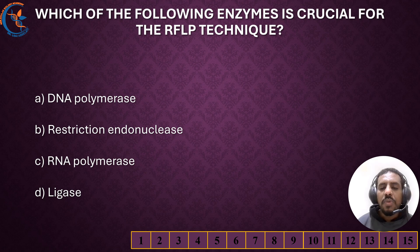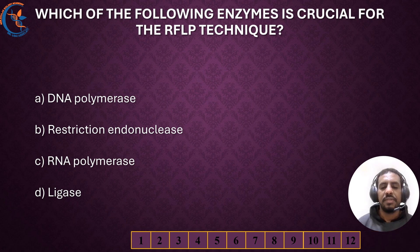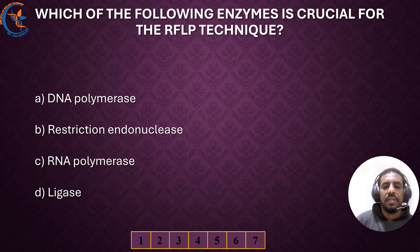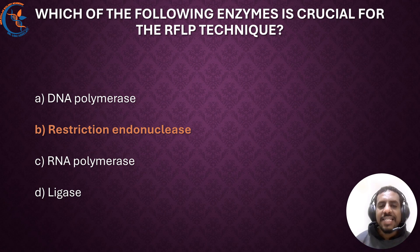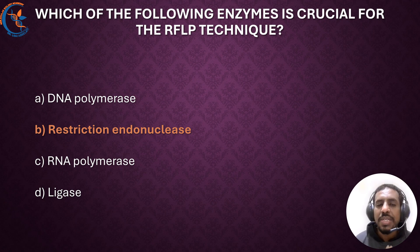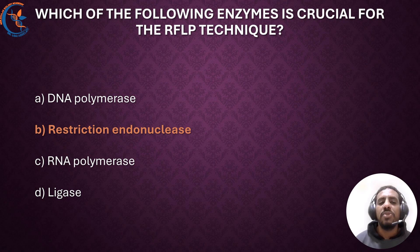Next question: Which of the following enzymes is crucial for the RFLP technique? The correct answer is restriction endonucleases. These are enzymes that cut DNA at specific sequences, producing fragments of varying lengths. These fragments can then be separated and analyzed to detect polymorphism.